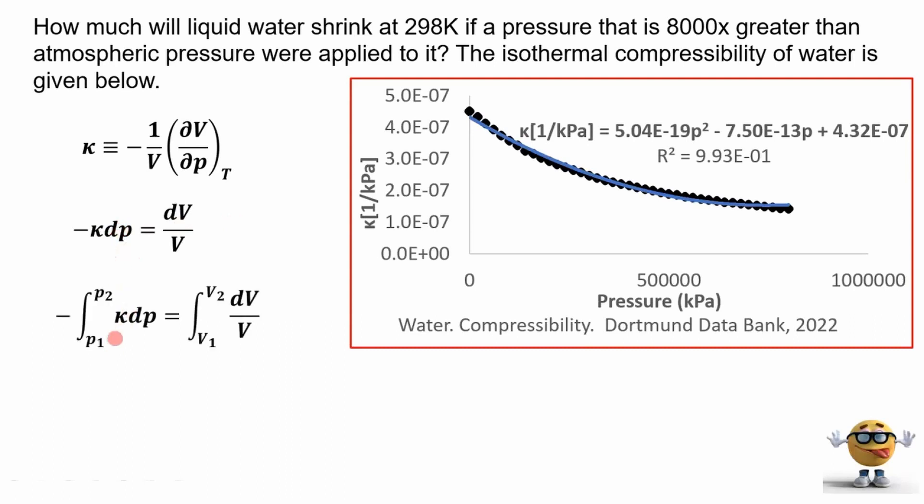We can integrate now both sides from the initial to final state, pressures and volumes. And we can plug in what kappa is, because kappa is going to change. So we can't pull it out of the integral. So we substituted it in the equation right here. And we left this one the same.